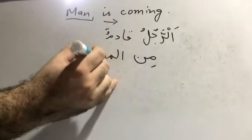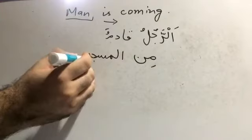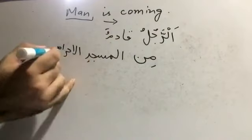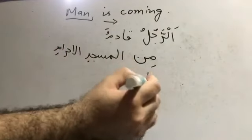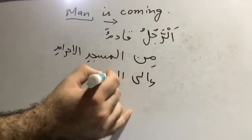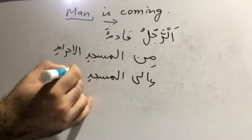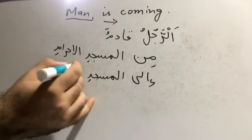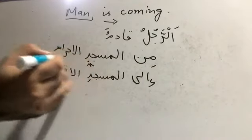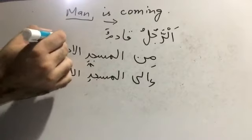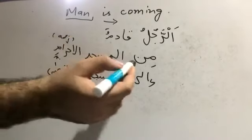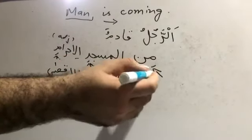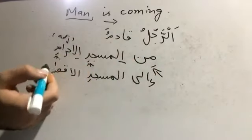In the Quran we find min al-masjid al-haram ila al-masjid al-aqsa. You can see that min al-masjid is genitive, al-haram is genitive — that is the sifat — and both are in the genitive case and both are ma'ruf, definite, because there is a haruf ul-jar coming. And there is another haruf ul-jar: ila al-masjid goes into genitive, and al-aqsa is also in the genitive case.